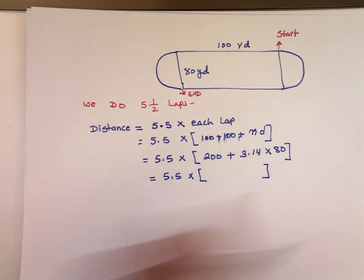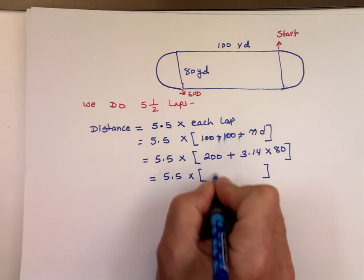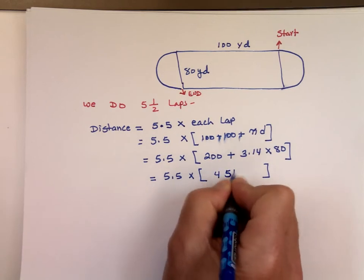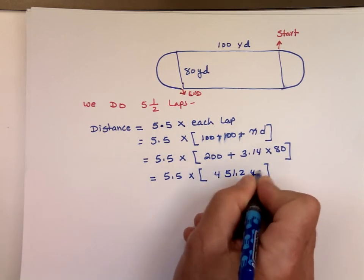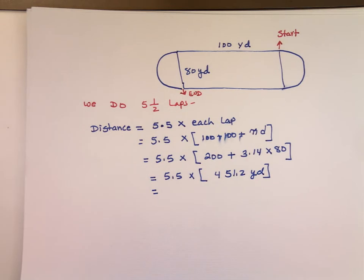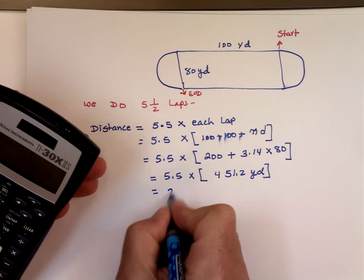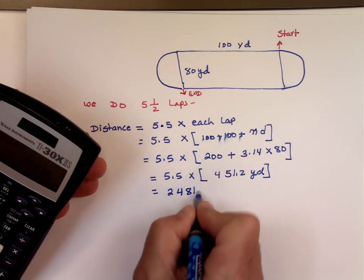And here's my calculator. 3.14 times 80 plus 200 is 451.2 yards. So you multiply it by 5.5. It is 2,481.6 yards.